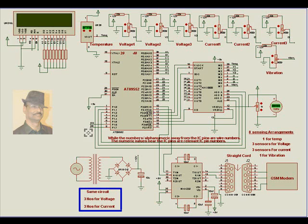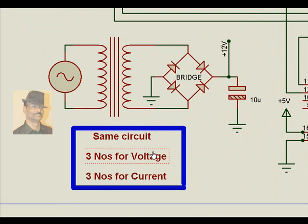We have this particular arrangement where we have the PT and CT arrangement exactly like this. We have three transformers for potential recording the potential voltage and three CTs for the current.